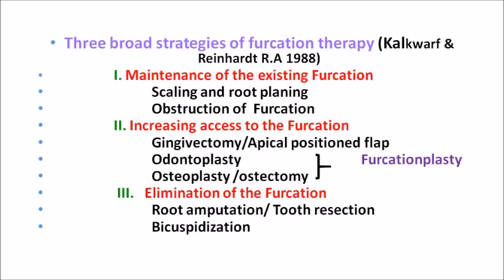Now we know what a furcation is and what the predisposing factors are. There are three main strategies for furcation therapy. One is maintenance of the existing furcation — there is furcation involvement but we want to maintain it without worsening. Maintaining the existing furcation can be done using scaling and root planing. The second strategy is obstruction of the furcation using any restorative material to fill off the furcation so that there is no more furcation.